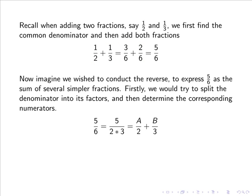Now imagine we wish to conduct the reverse, to express 5/6 as the sum of several simpler fractions. Firstly, we would try to split the denominator into its factors and then determine the corresponding numerators. So 5/6 could be expressed as 5/(2×3), which would equal A/2 plus B/3, where A and B are constants to be determined.